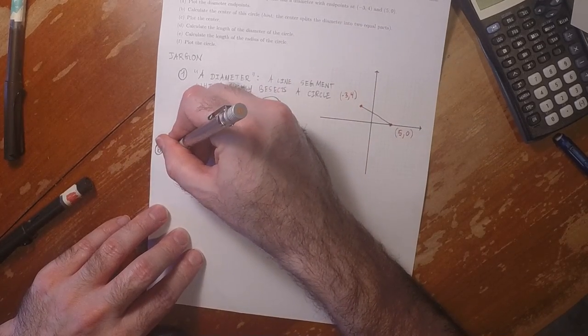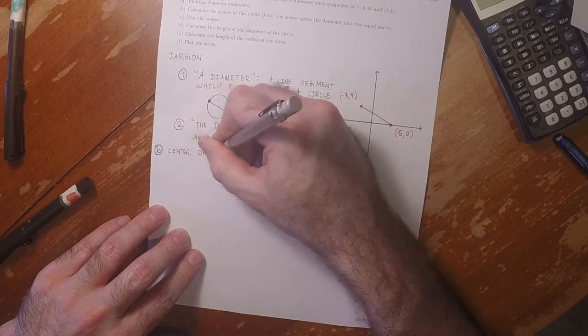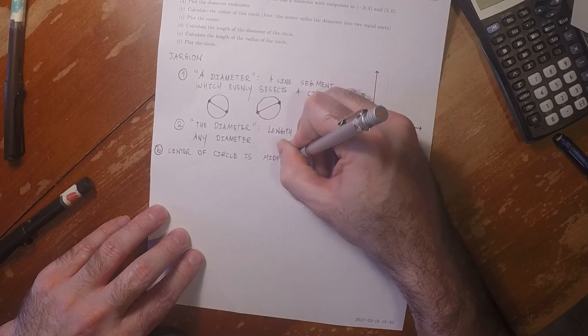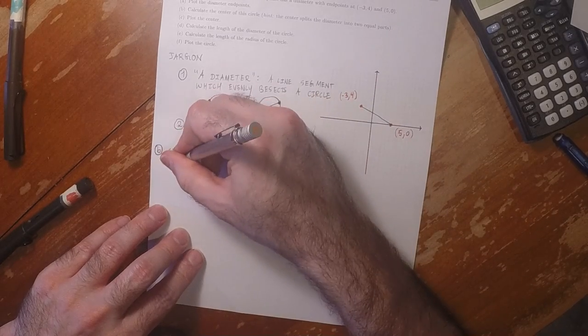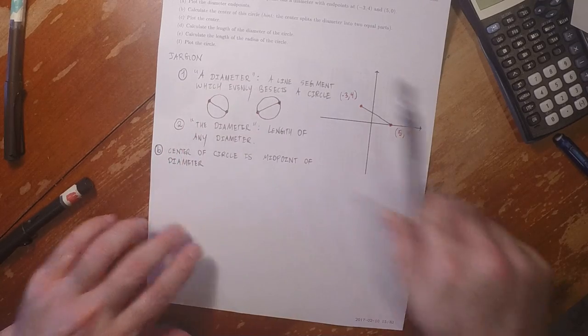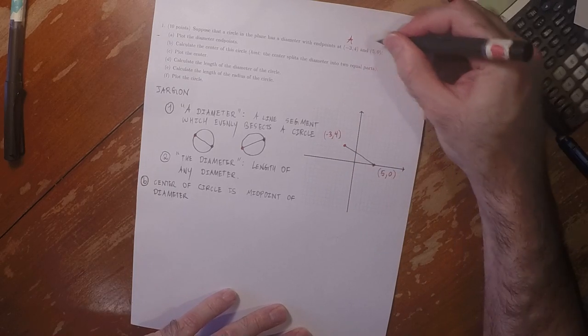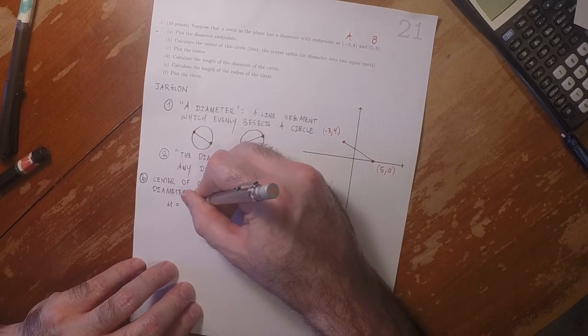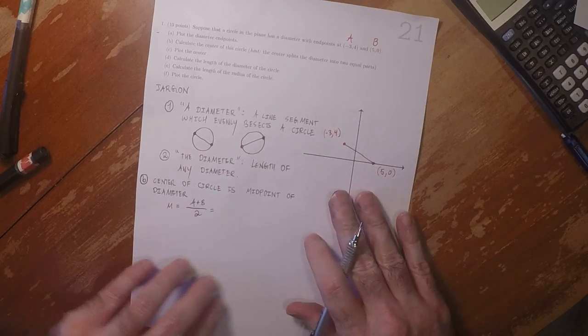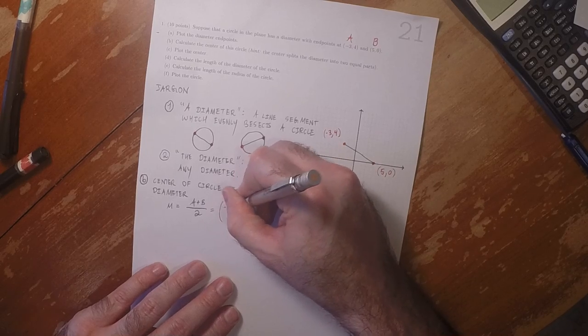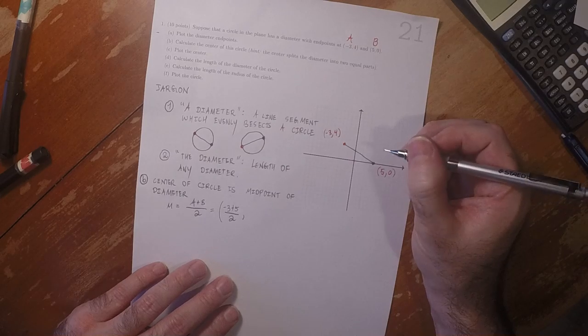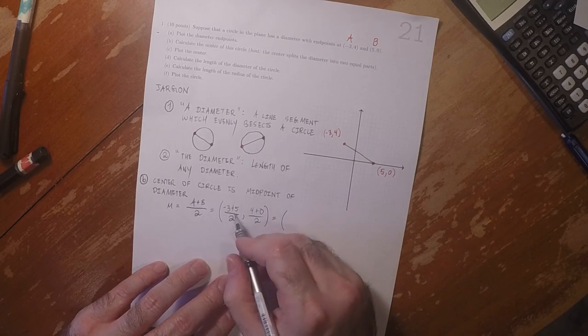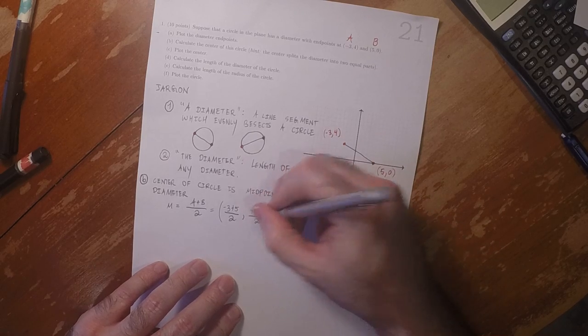the center of this circle is going to be the midpoint of the diameter. And if we call this point A and this point B, then the midpoint M will be A plus B over 2, which is negative three plus five divided by two, and four plus zero divided by two, which is positive two over two, which is one, and four over two, which is two.